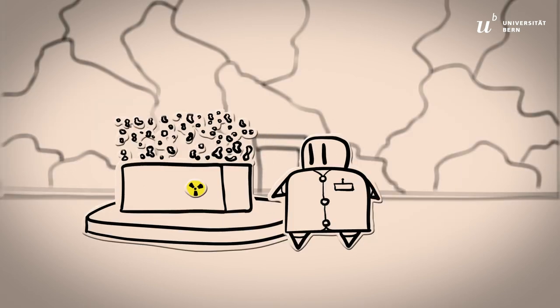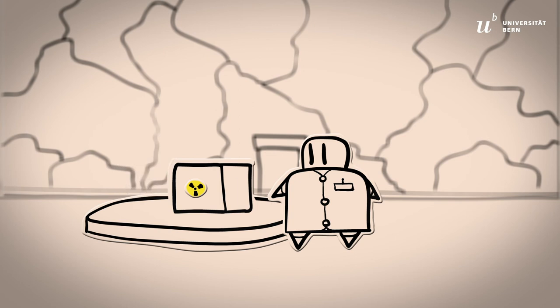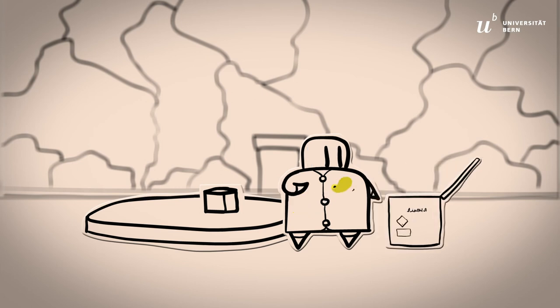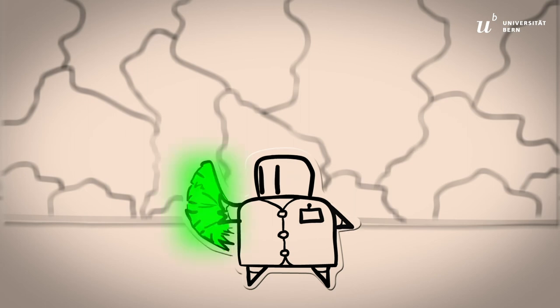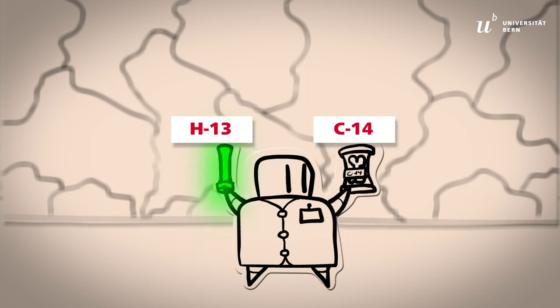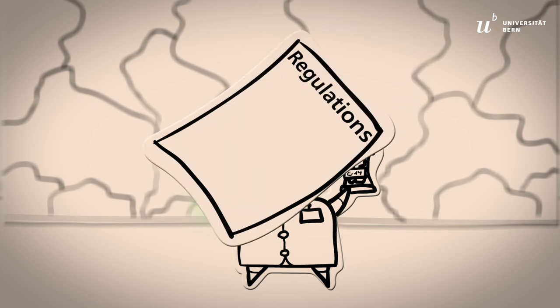Materials with half-lives of less than 60 days must be inactivated in a decay room. After inactivation, remove any radiation symbols and dispose of it as hazardous waste. For tritium, carbon-14, and sources with half-lives of over 60 days, different regulations for disposal apply.